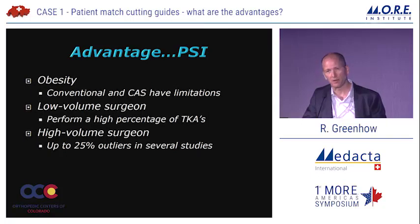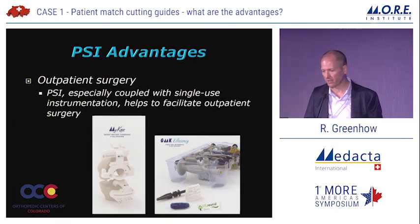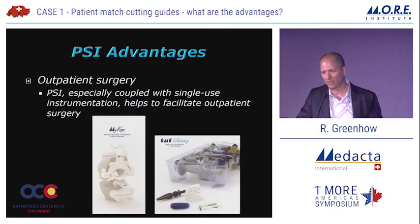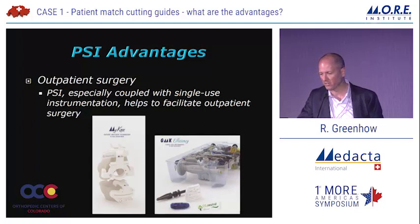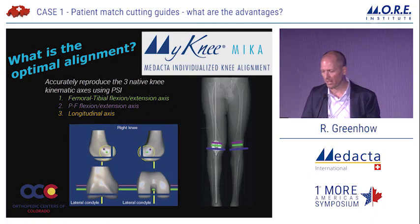High-volume surgeons — even in our best hands — there are 25% outliers. So I think there's an advantage here, and this study supports that: 10% outliers with MyKnee versus 25% for conventional instrumentation. Outpatient surgery — I do a lot of outpatient joint replacements and have for the last five years. PSI, especially when coupled with single-use instrumentation, has advantages in these centers where there's significantly reduced sterilization capacity.